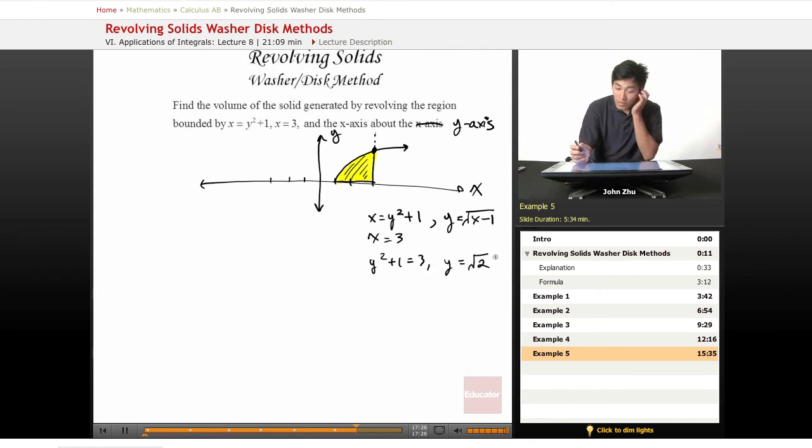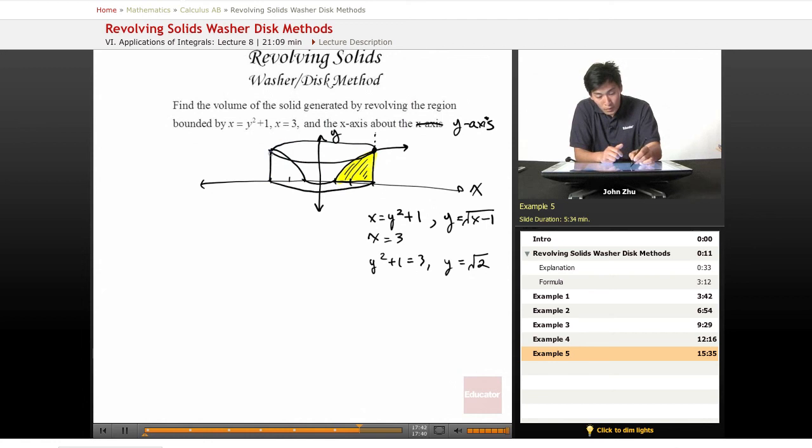So we're revolving around the y-axis, so our shape will look something like this. Looks kind of like a speaker facing upwards. We have to just keep with our method. So let's draw our washer.